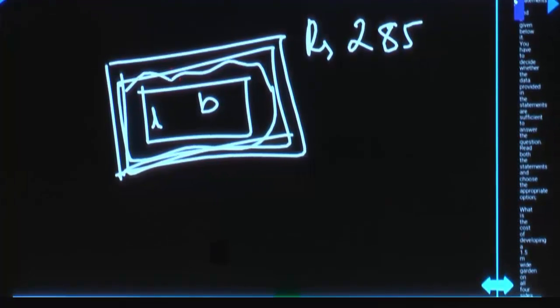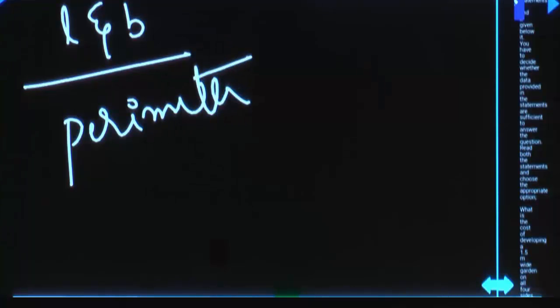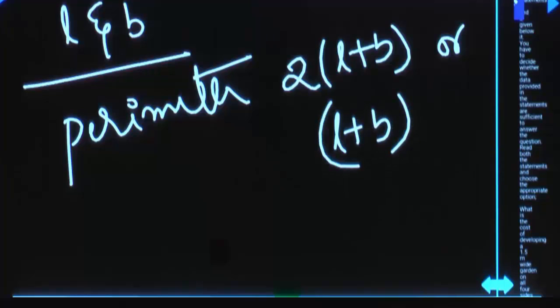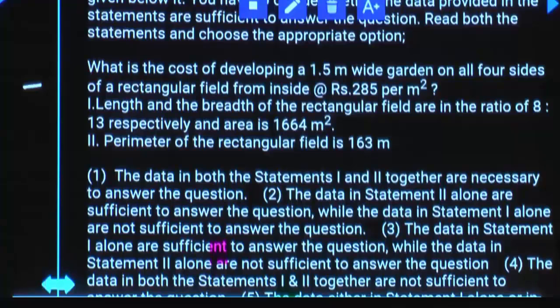You need to have information about length and breadth — separate individual values. This is one way. The other way is: if you know the perimeter, still you can answer this question. Even if you are given 2 into L plus B, or simply L plus B alone, still we can answer this question.